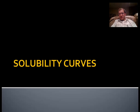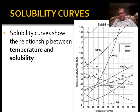Next up we're going to look at solubility curves. Solubility curves are basically just a line or curve that shows the relationship between the temperature of a solution or a solvent and the amount of solute that can dissolve into it — the relationship between temperature and solubility. Here, temperature would be considered the independent variable because it's what you can control and adjust, and then the solubility of the solute would be the dependent variable because it's what's changing as a result.